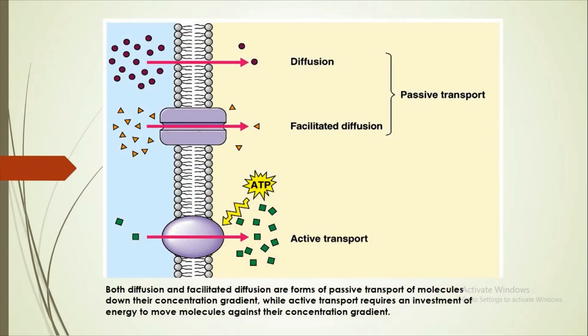Here is the summary. For diffusion and facilitated diffusion, they are involved in passive transport. For active transport, it also requires energy. For cytosis, it also requires energy to carry out the in-folding or out-folding of the plasma membrane. That is all for our lecture. Thank you.